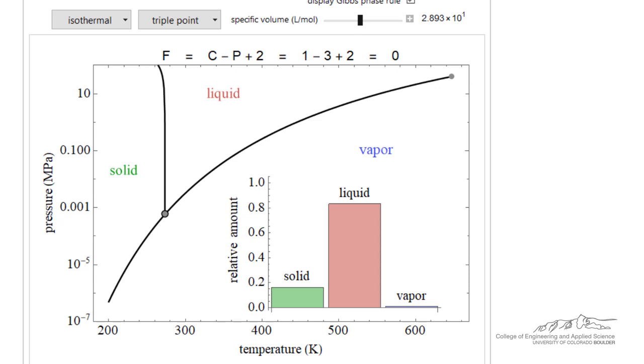Now we have three phases present, and we're gonna stay on this three phase point, that triple point. You see from the phase rule, we have no degrees of freedom. Remember in this phase rule, p is the number of phases, and c is the number of components,